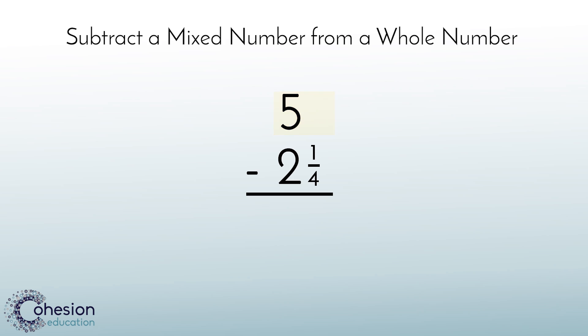5 is greater than 2 and 1 fourth and therefore you should be able to complete this subtraction equation. But you need a fraction to subtract from because you can't subtract 1 fourth from nothing. This is where students would apply their knowledge of renaming or regrouping fractions to turn our whole number 5 into a mixed number. We need to take one of our wholes and turn it into a fraction that 1 fourth can be subtracted from.